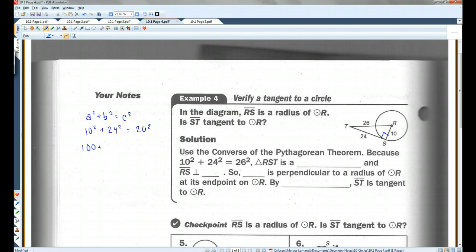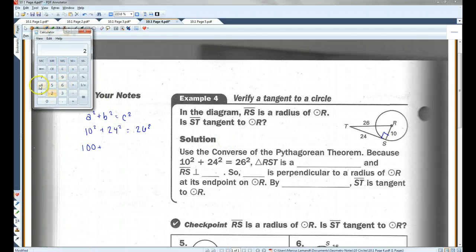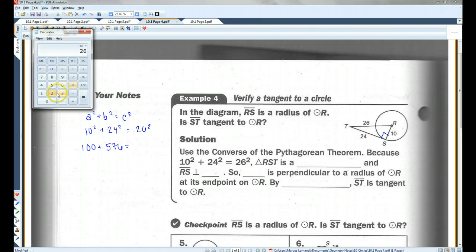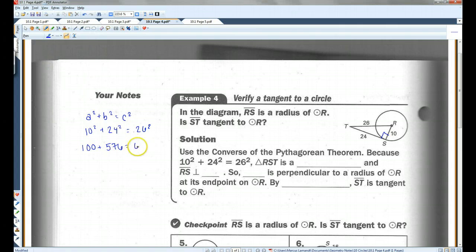10 squared is 100. 24, let's pull out a calculator here. 24 times 24, 576. 26 times 26, 676. 676 does, in fact, equal 676. So, triangle RST is a right triangle. And RS is perpendicular to ST. So, ST is perpendicular to a radius of circle R at its end point on circle R, by theorem 10.1, ST is tangent to circle R.